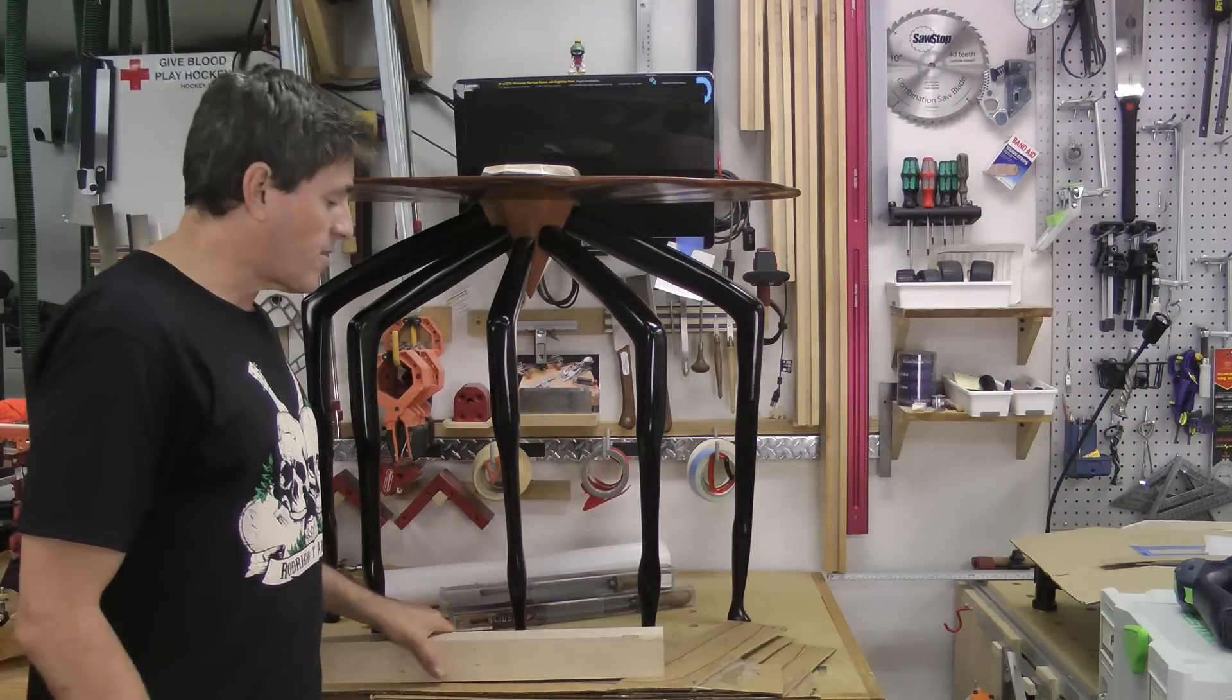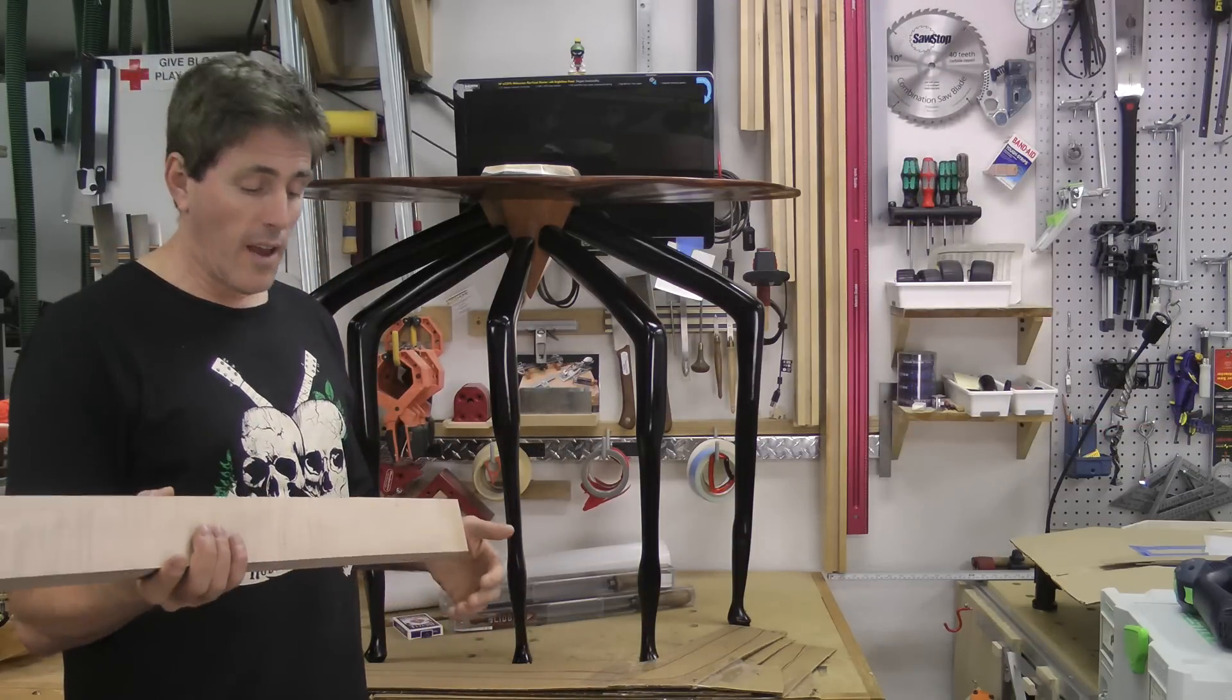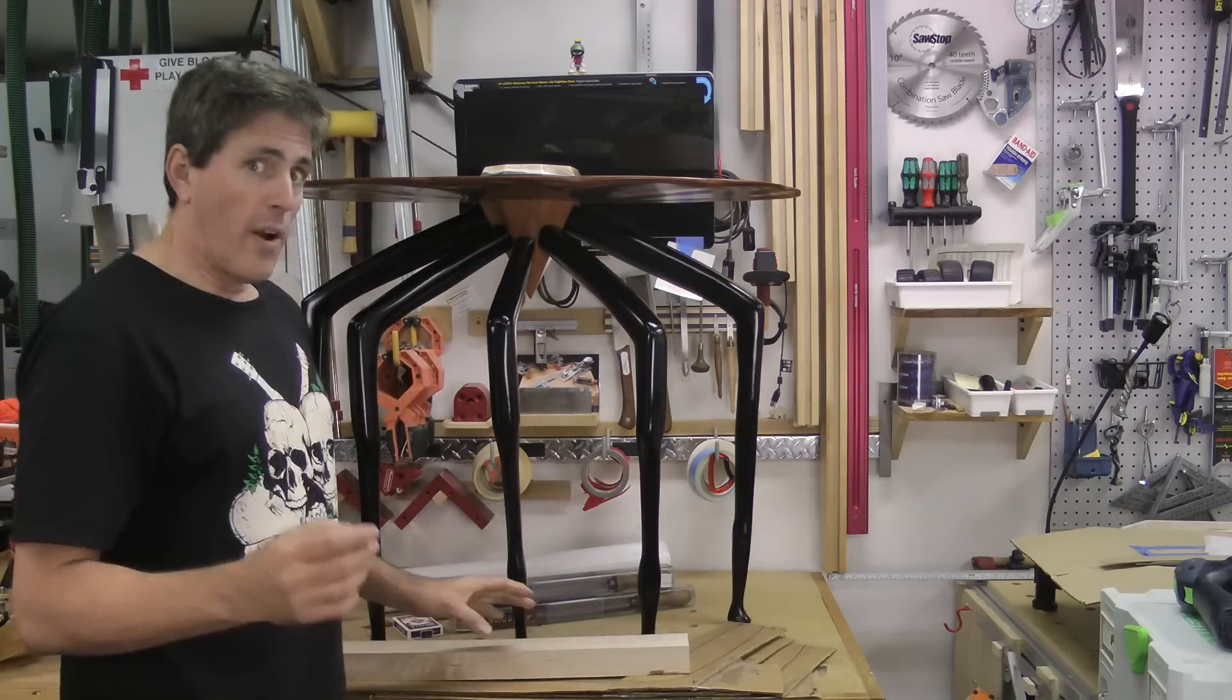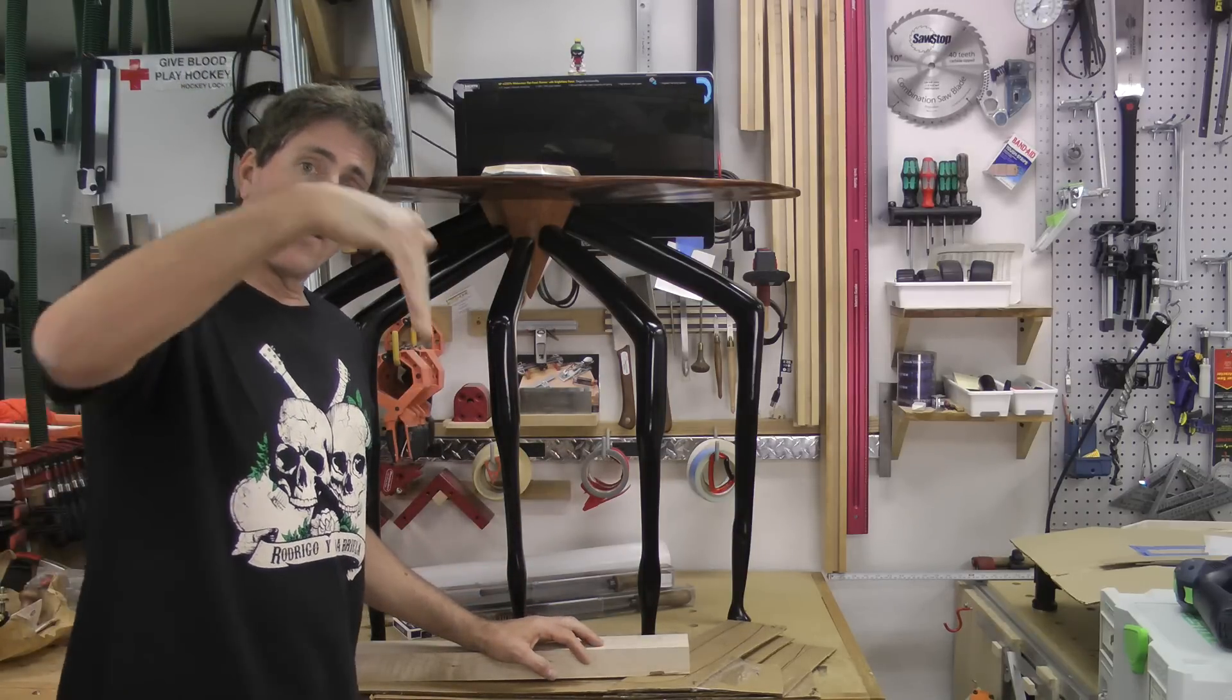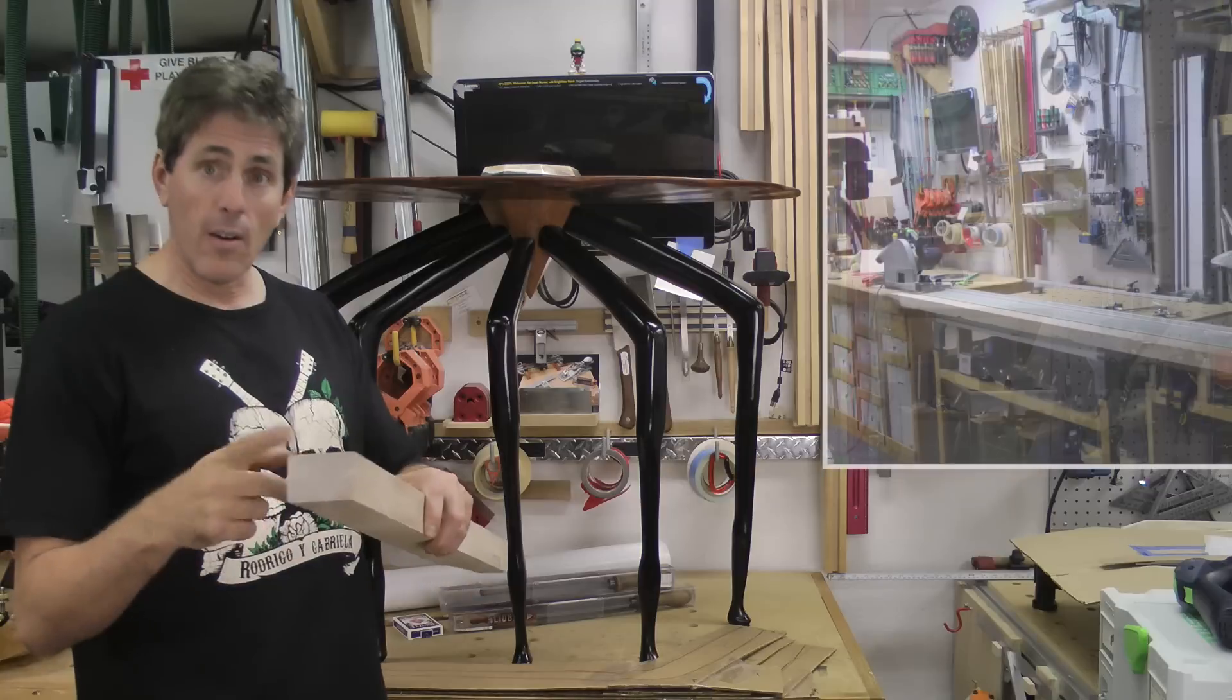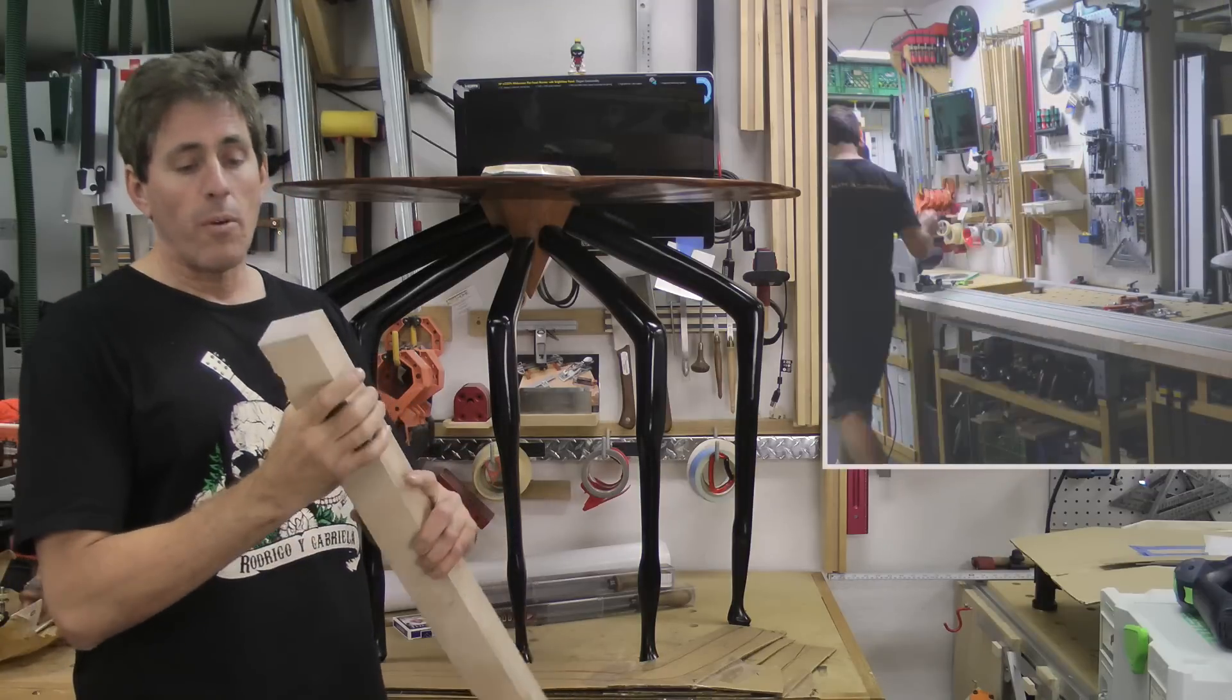Now generally when you're making legs, you're always going to look for riftsawn wood. So what I did is I had taken a large board, a wider board that had regular flat grain, but if you watch the grain on it, you would see that it actually looped all the way over. So what I could do is I could rip it into thirds and then the outside thirds would all be riftsawn.